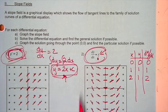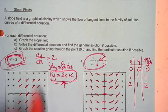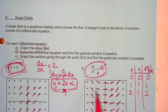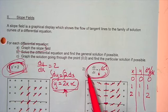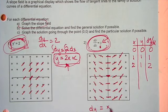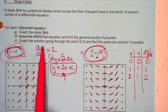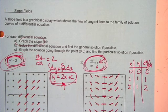As you draw these slope fields, you can get an idea of what the original curve looks like. This is part A — graphing the slope field. This is a differential equation we can solve. We put the dx over here and integrate, giving us y equals x squared over 2 plus c. So this is your general solution. The next part says to graph the solution going through the point (0, 0).